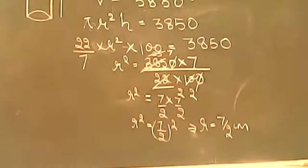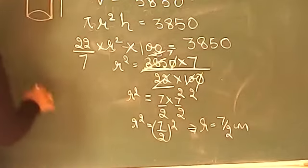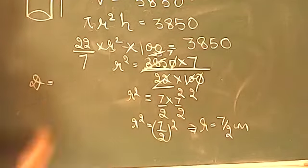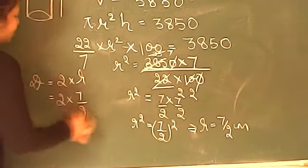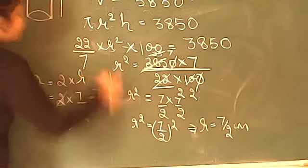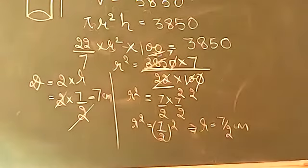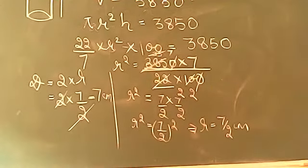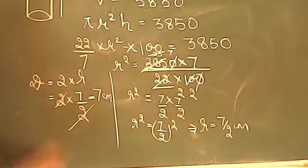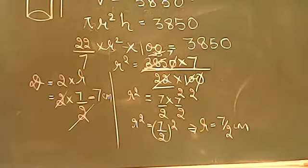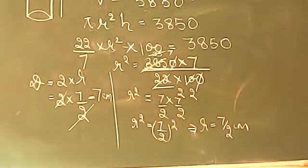Once r = 7/2 cm is found, we need diameter, not radius. Diameter = 2 × r = 2 × 7/2. The 2s cancel, giving diameter = 7 centimeters. It is an easy question. When you know that you will need to cancel at the end, there is no need to do excessive multiplication — only cancel as much as is required.